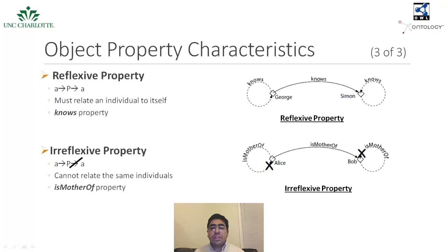A property P is said to be reflexive if it must link the individual A to itself. An example of a reflexive property is knows. Since every person always knows himself or herself in addition to knowing others, knows is defined as a reflexive property. Unlike reflexive properties, if an irreflexive property links an individual A with B, then they both can never be marked as the same individual. An example of an irreflexive property is mother of, as shown in the figure.